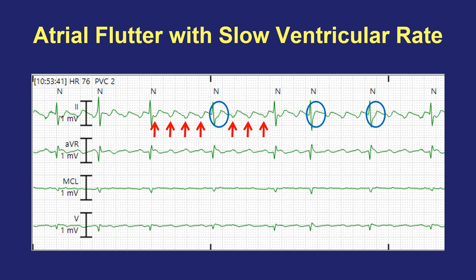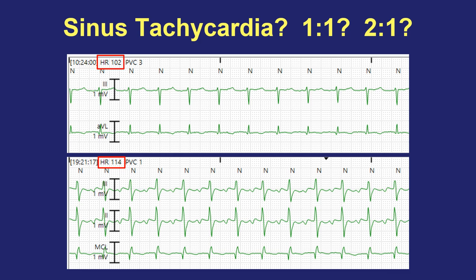Let's review some examples of how to not miss that diagnosis. Here are two examples of patients who were called to have sinus tachycardia — one with a heart rate of 102 and one with a heart rate of 114. In each case, the P waves were either not very visible, or in the bottom example it looked like there was one P wave for every QRS complex, and the patient was misdiagnosed as having sinus tachycardia.